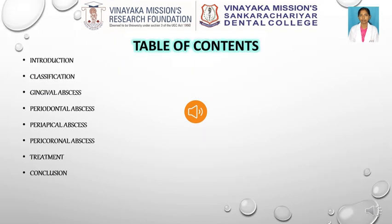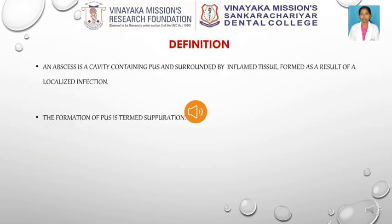We are going to discuss about the classification of periodontal abscess, mainly gingival abscess, periodontal abscess, periapical abscess, and pericoronal abscess, followed by their management. Before moving to periodontal abscess, we should know about the periodontium. Periodontium refers to the tissue that surrounds and supports the tooth structure. When there is a localized purulent inflammation of this periodontal tissues, it is called as periodontal abscess.